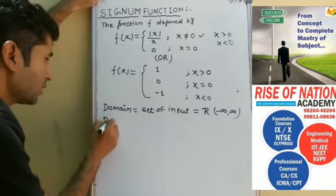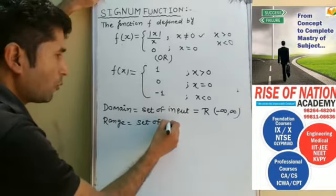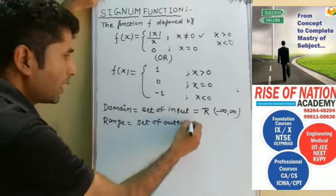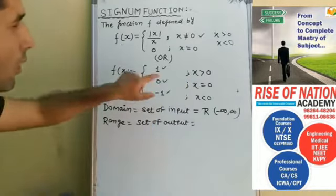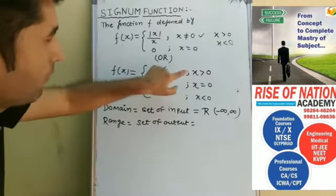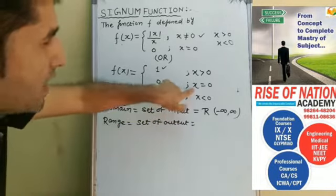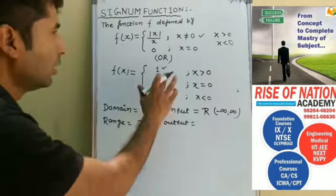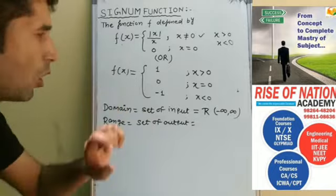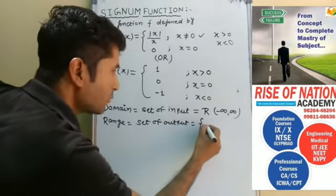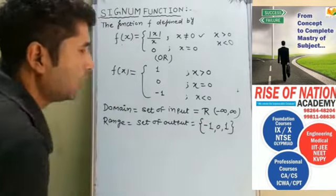Now what is the range? Range is the set of outputs. For this function, we always get 1, 0, or minus 1. If we put a positive value of x we get 1, if we put a negative value we get minus 1, and if x equals 0 we get 0. So the range of the signum function is {−1, 0, 1}.